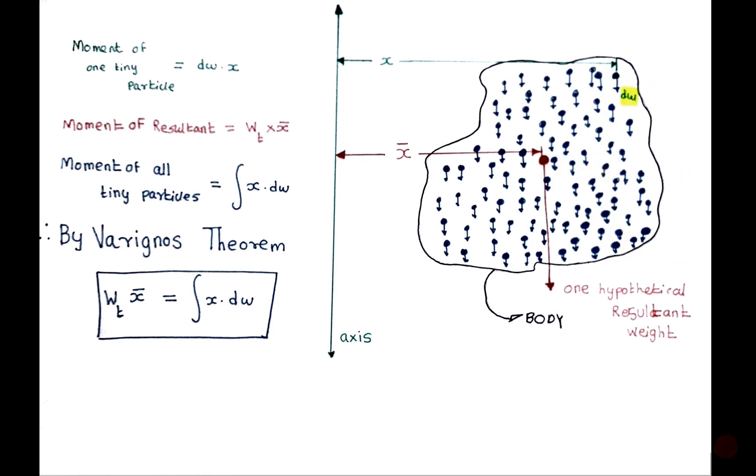If the weight is more on one side, the center of gravity will shift towards that side. If the area is more on one side, the centroid will shift towards that side. Thank you. This was all about center of gravity, centroid, and center of mass.